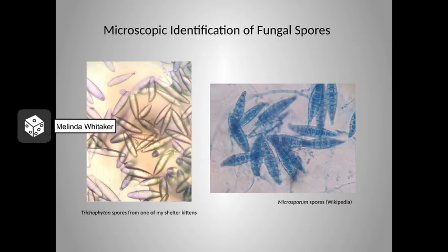This slide shows microscopic identification of fungal spores. The picture on the left shows some Trichophyton spores diagnosed from one of my shelter kittens, and on the right are some Microsporum spores. I obtained that picture from Wikipedia because I couldn't find a good picture from one of my kittens.